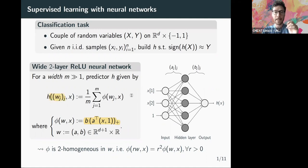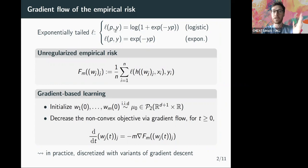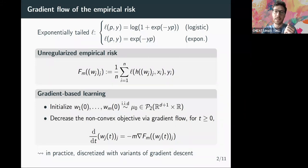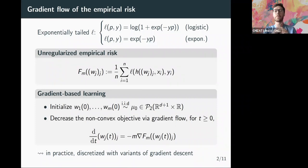For the training algorithm, we consider gradient flow on the empirical risk. We use a loss that is monotonically decreasing and exponentially tailed — this covers the logistic loss and the exponential loss — and we minimize the unregularized empirical risk. In the infinite-width limit there are many minimizers, since any predictor that correctly predicts the sign on all training samples can have its magnitude scaled to make the empirical risk arbitrarily close to zero.